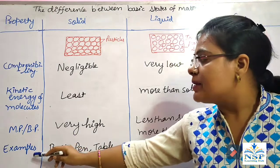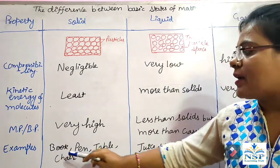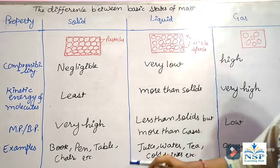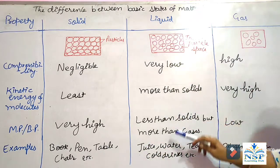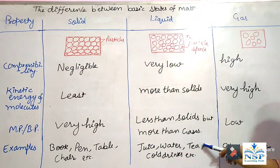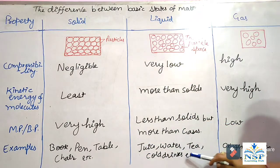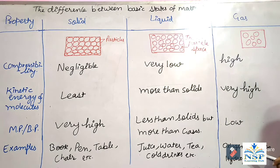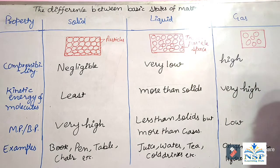Examples of solids are book, pen, table, chair, etc. Examples of liquids are juice, water, tea, cold drinks, etc. And examples of gases are oxygen, nitrogen, and hydrogen.